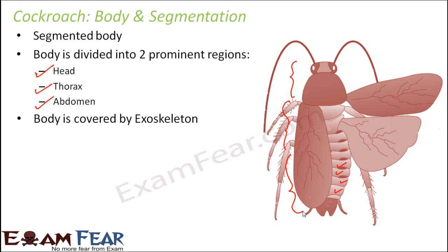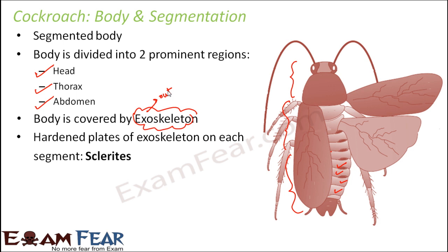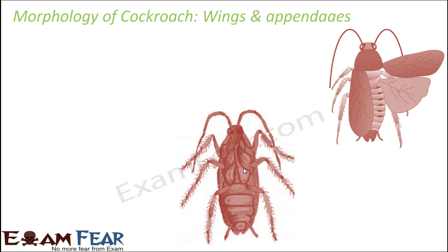From the outside, the body is covered by an exoskeleton. The word 'exo' means outer, so the skeleton on the outer side acts as a covering of the body — that is called an exoskeleton. Similar to a snail's shell, the cockroach body also has an exoskeleton. The hardened plates of exoskeleton on each segment are called sclerites.